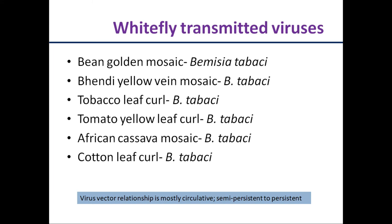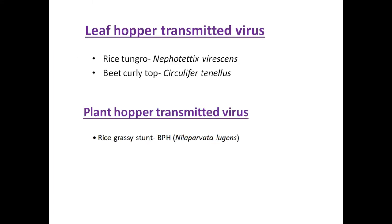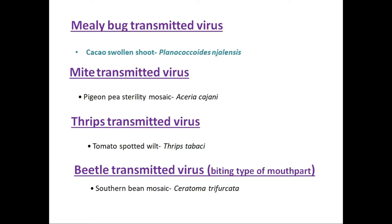Leafhopper is the second most important homopteran insect vector — it transmits rice tungro virus and beet curly top virus. Planthopper transmits rice grassy stunt virus. Mealybug transmits cacao swollen shoot virus. Mite transmits pigeon pea sterility mosaic virus. Tomato spotted wilt virus is transmitted by thrips, particularly Thrips tabaci. Beetle, which has biting and chewing mouthparts, transmits southern bean mosaic virus (SoBeaMV).